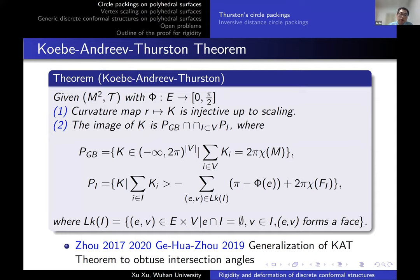We have the famous Koebe-Andreev-Thurston theorem for Thurston circle packing. The theorem has two parts: the first part is about rigidity — the circle packing metric is determined by the curvature. The second part is about the image of the curvature map, which is in fact a convex polytope.